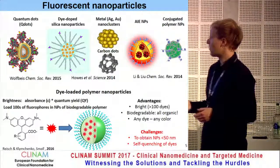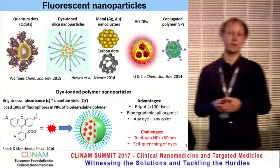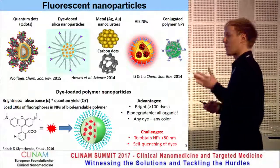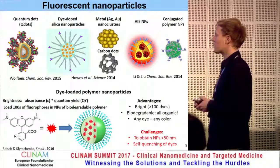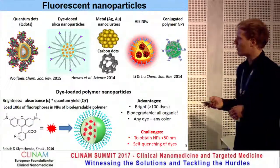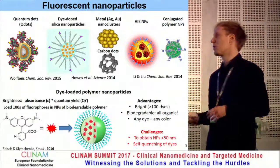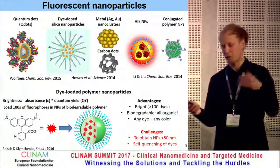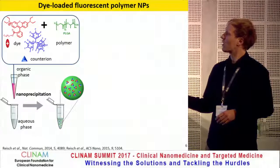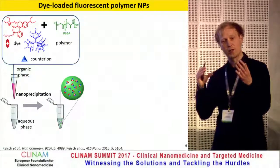The advantages of this approach are that we can get very bright nanoparticles, and if we use a biodegradable polymer as the matrix, we get biodegradable materials. The color basically only depends on the dye, so we can easily obtain different colors. It remains challenging to get high-quality particles below 50 nanometers, and a major challenge is to avoid self-quenching of dyes at very high concentrations inside a particle, which would reduce quantum yield and thus reduce brightness. Our approach combines cationic fluorophores with bulky hydrophobic counter-ions that act as a spacer, avoiding aggregation and self-quenching.